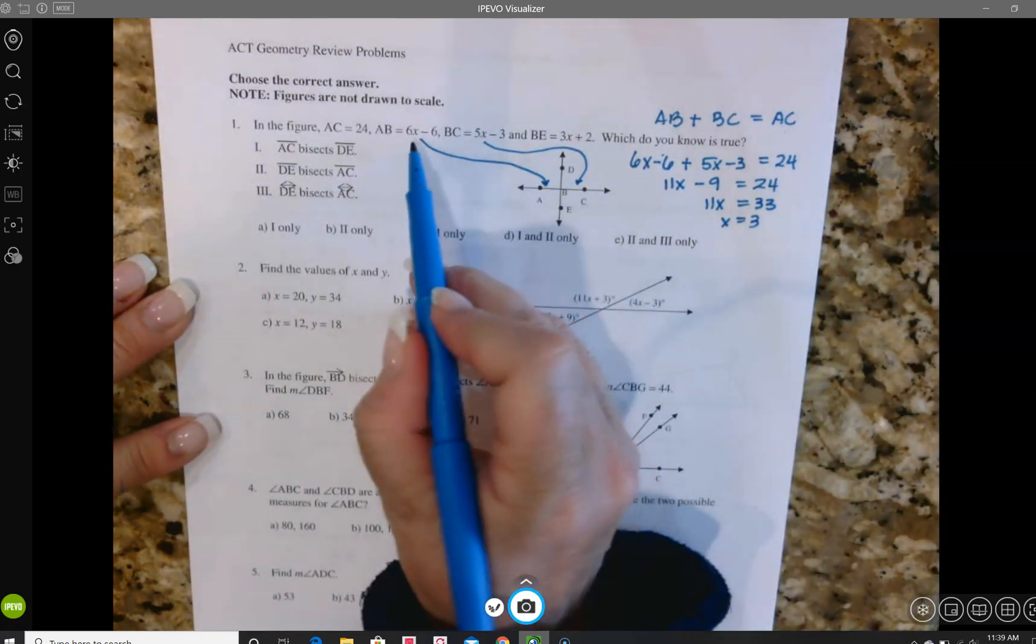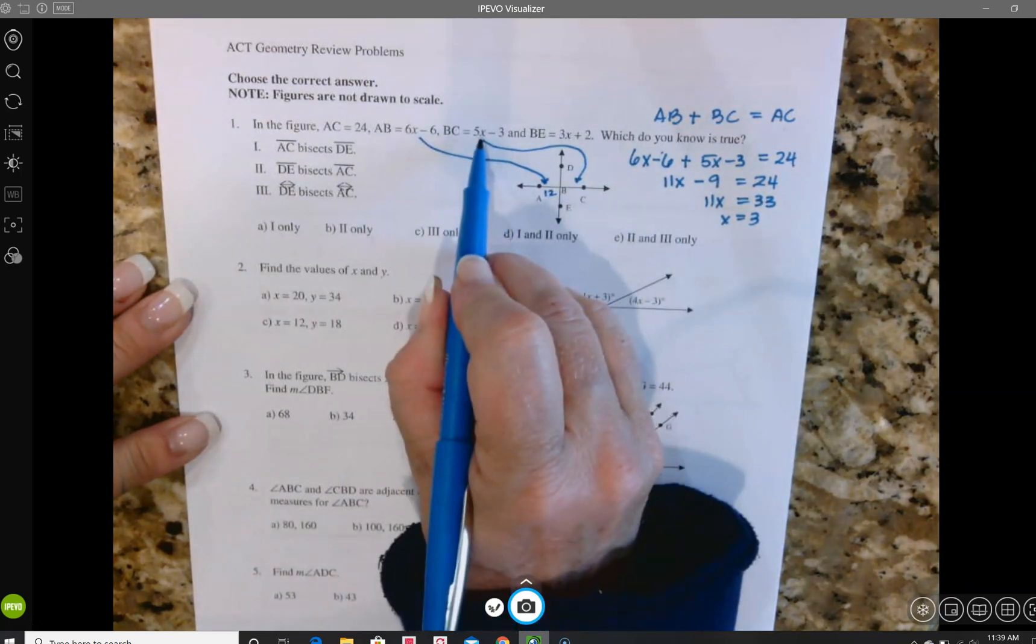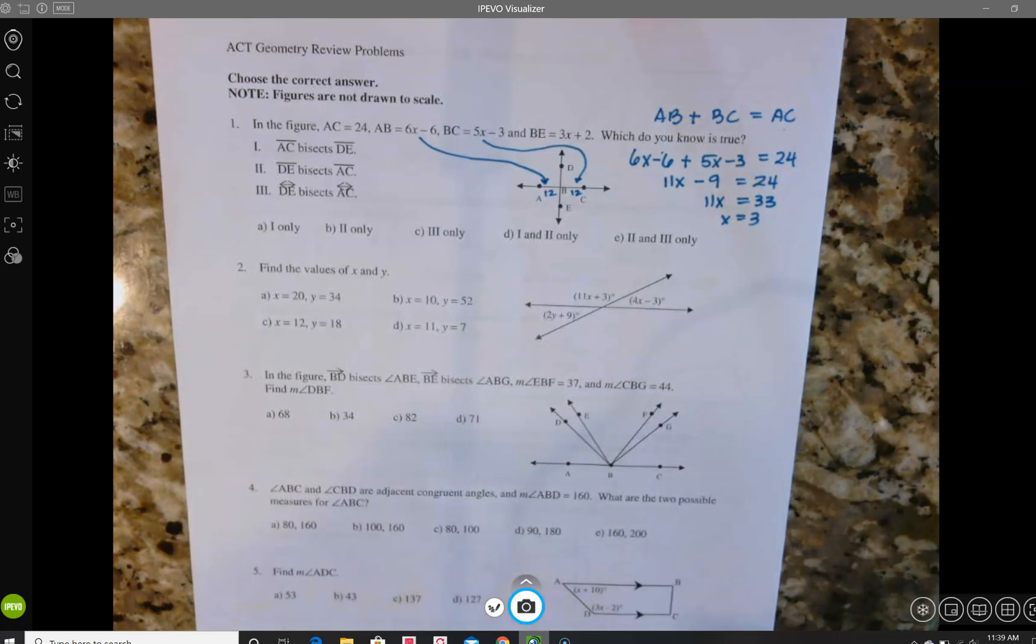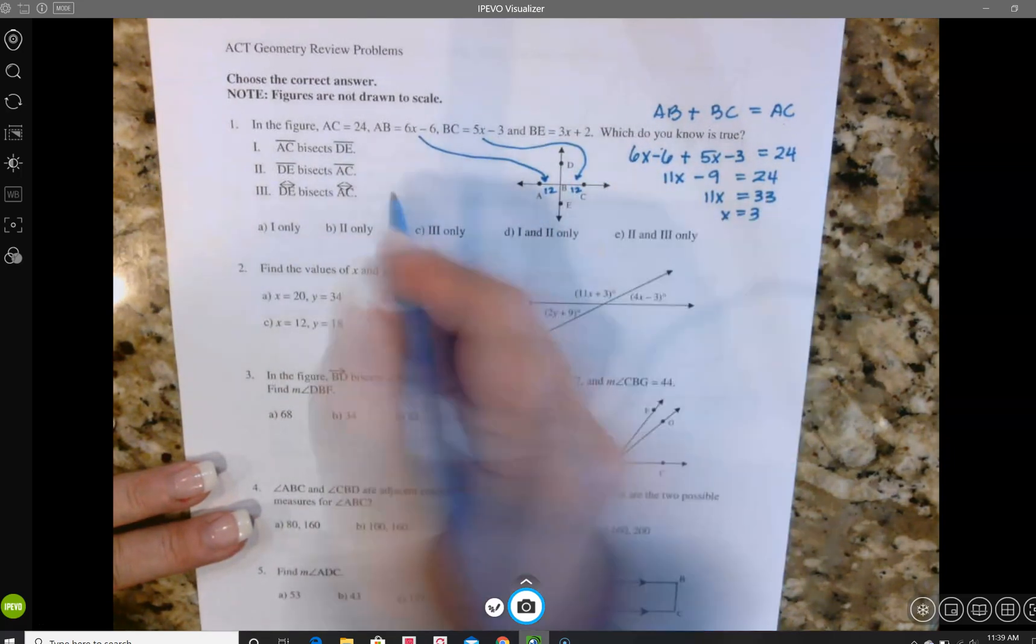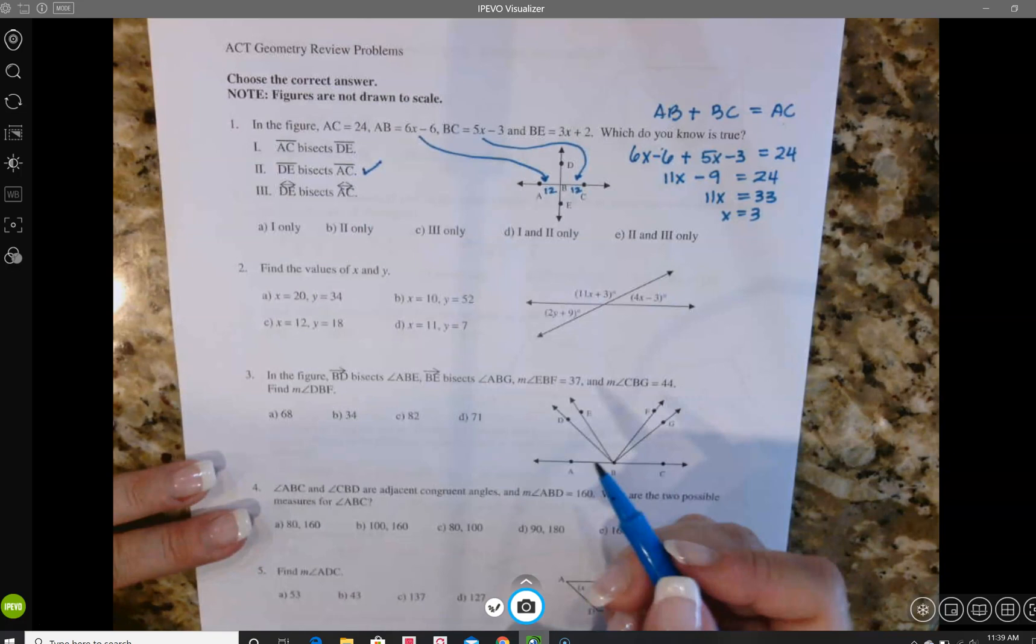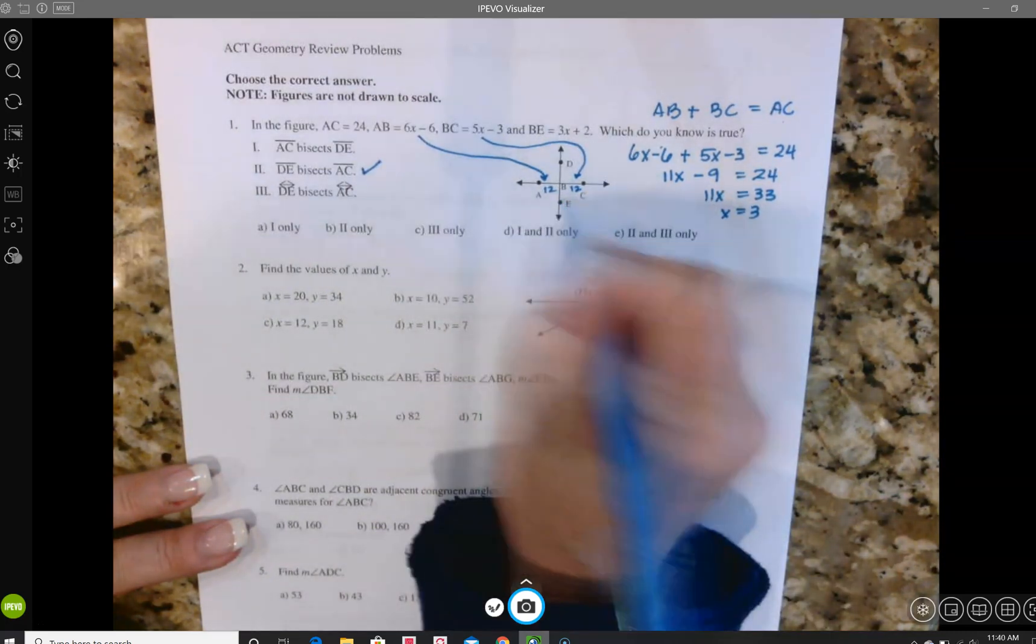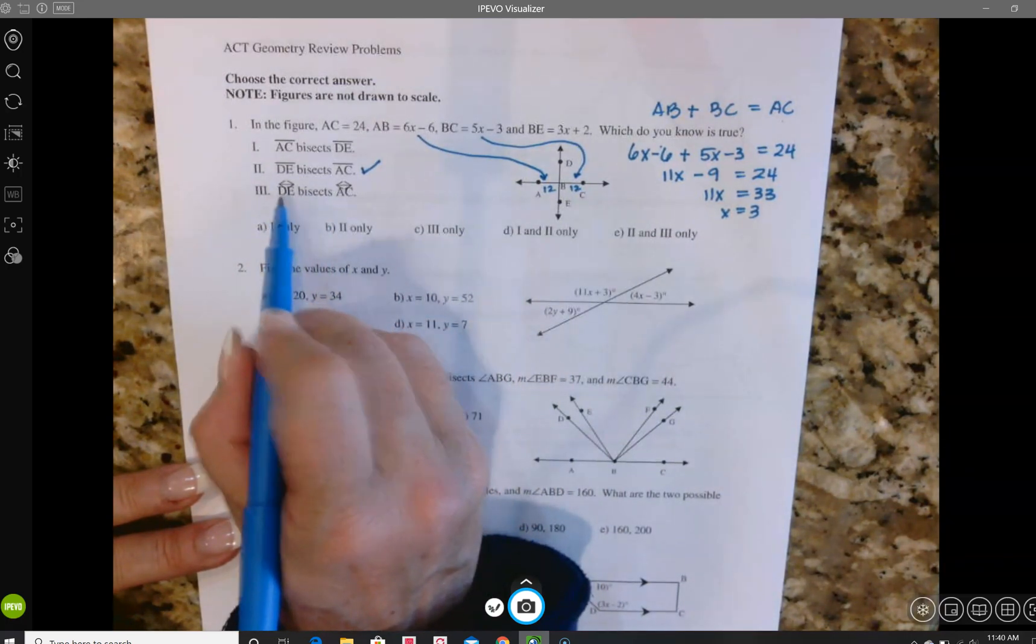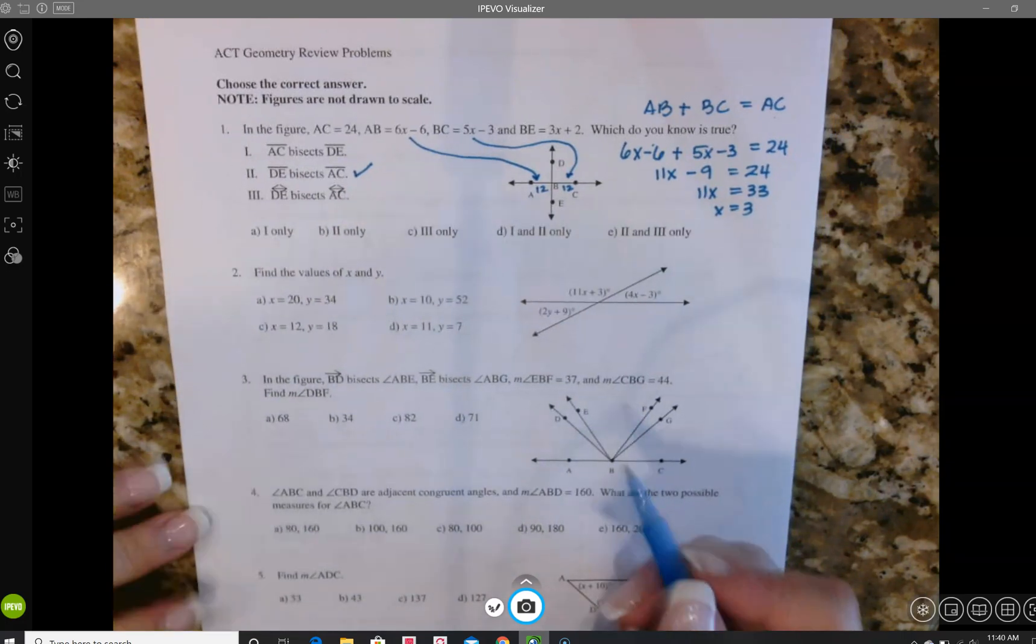So then if I go back and I do 6 times 3, 18 minus 6 that's 12. 5x minus 3, so 5 times 3 is 15 minus 3 that's 12. So 12 and 12 is 24 and they are equal parts. So I know that AC has been cut in half. AC gets cut in half by DE, so that is statement number two right here. I cannot tell if DE was cut in half because I only know one side of the story and I don't know the total. And then number three with the arrows on the ends of the lines here, lines are infinitely long and so the notation is wrong in part three.